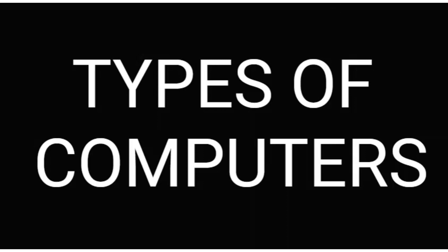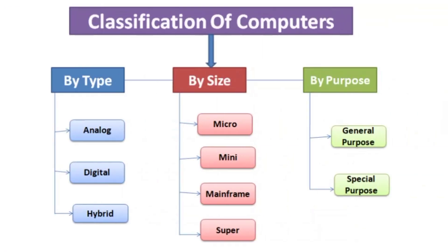Hello and welcome. Today we are going to discuss a very interesting topic: classification of computers, or types of computers. Computers can be classified into three categories. The first category is type — meaning what kinds of computers are possible: analog, digital, and hybrid. The second category is with respect to size. The third category is with respect to purpose.